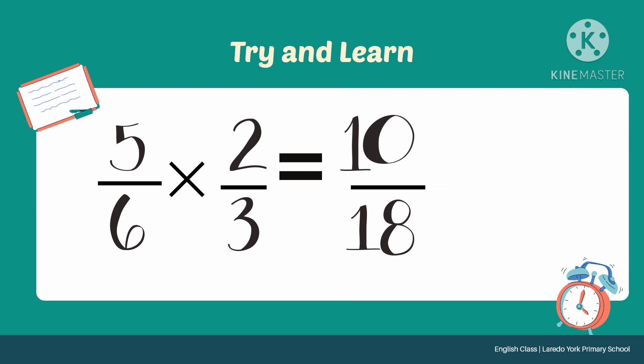Let us now simplify 10 over 18. What is the GCF of 10 and 18? Apply the divisibility rules. Use continuous division to get the GCF. The GCF of 10 and 18 is 2.